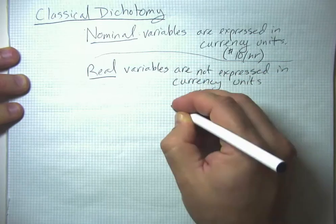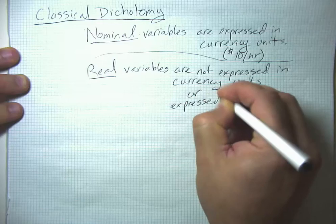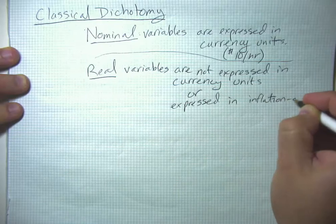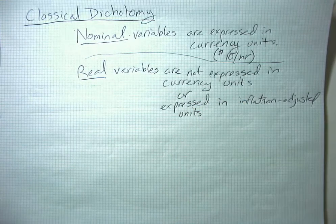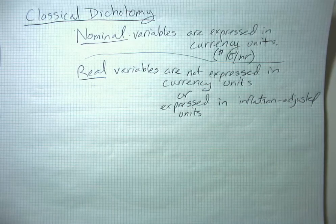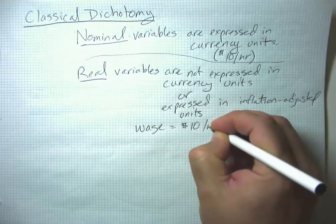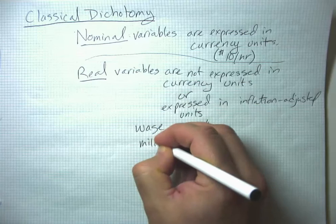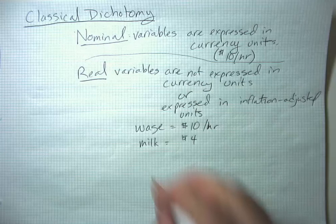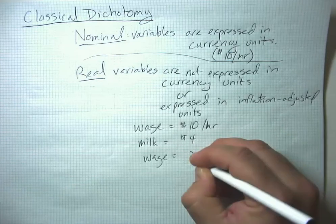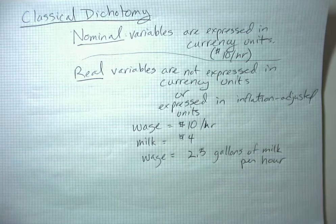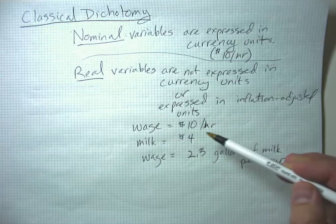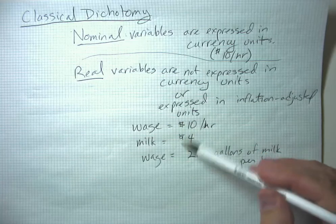Real variables are not expressed in currency units — or they're expressed in inflation-adjusted units. So if your wage is $10 an hour and a gallon of milk costs $4, what's your wage in terms of gallons of milk? Your wage would be 2.5 gallons of milk per hour. When we take two nominal variables and construct a ratio of them, the dollar signs cancel out and we get a real variable.